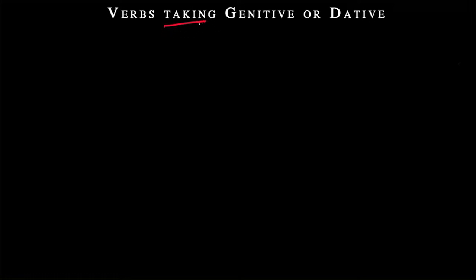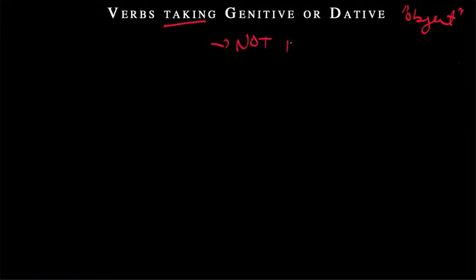In this lesson, we're going to talk about verbs that take the genitive or dative case. When we're talking about 'taking,' we mean working together — a verb that will have a nominative subject, expressed or unexpressed, but then will take a genitive or dative, what we might call an object. But the elephant in the room is that this is not the accusative case, which we know to be our normal direct object case. So these are a slight exception.